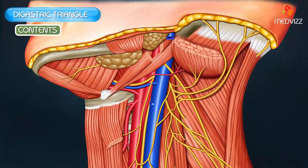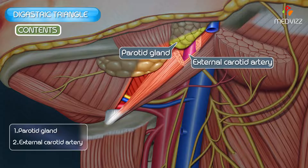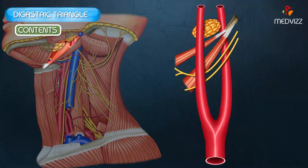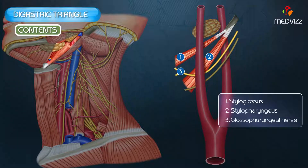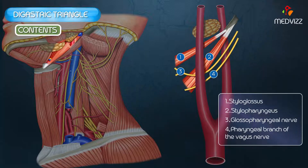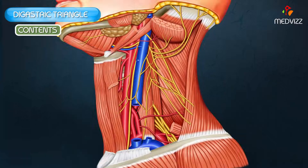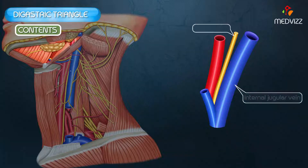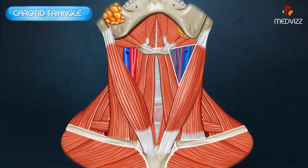In the posterior part of the digastric triangle, the superficial structures are the lower part of the parotid gland and the external carotid artery before it enters the parotid gland. The deep structures passing between the external carotid arteries include the styloglossus, stylopharyngeus, glossopharyngeal nerve, the pharyngeal branch of the vagus nerve, the styloid process, and a part of the parotid gland. The deep structures also include the internal carotid artery, internal jugular vein, and the vagus nerve.